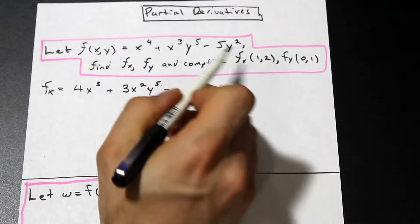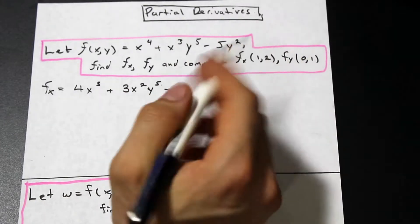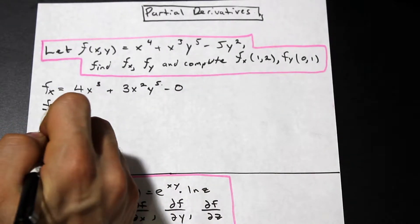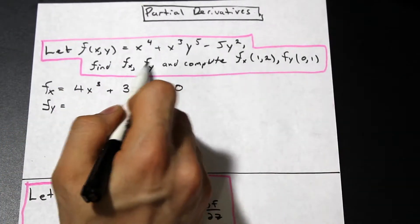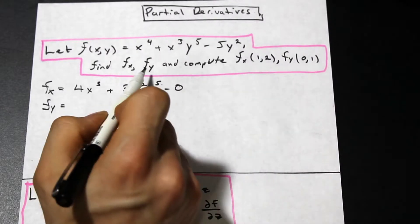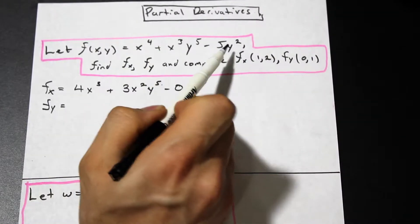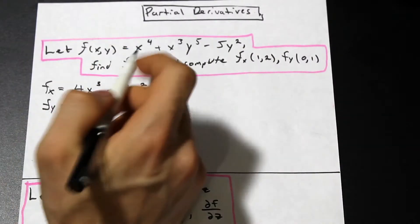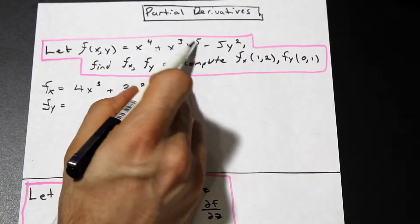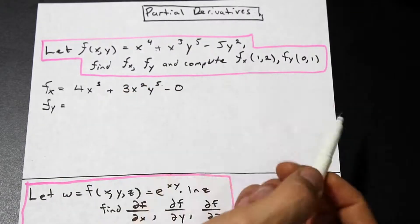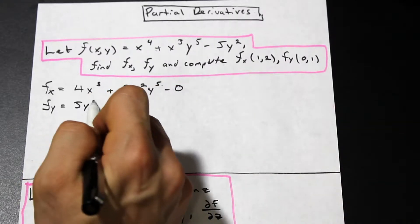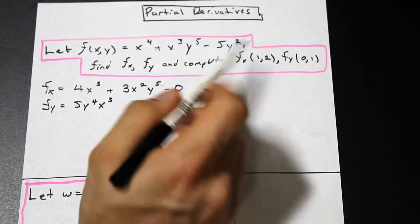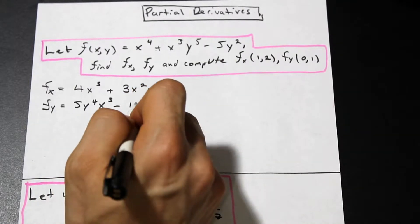When we take the derivative of a constant with respect to anything, it equals zero. Now let's do f sub y — the partial derivative of f with respect to y. Here y is the variable and x is the constant, so x to the fourth is a constant and goes to zero. For the next term, the derivative of y to the fifth is 5y to the fourth, and x cubed stays the same as a constant. We also get a 10y term.